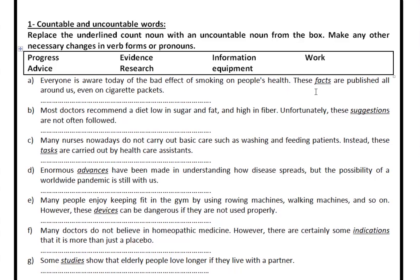Now we need to practice this. In each one of these sentences, you have an underlined word — like 'facts', 'suggestions', 'tasks', 'advances', 'devices', 'indications', and 'studies'. What you need to do is search for the word that has a similar meaning in the box and replace the underlined word with one of those words, making the necessary changes.